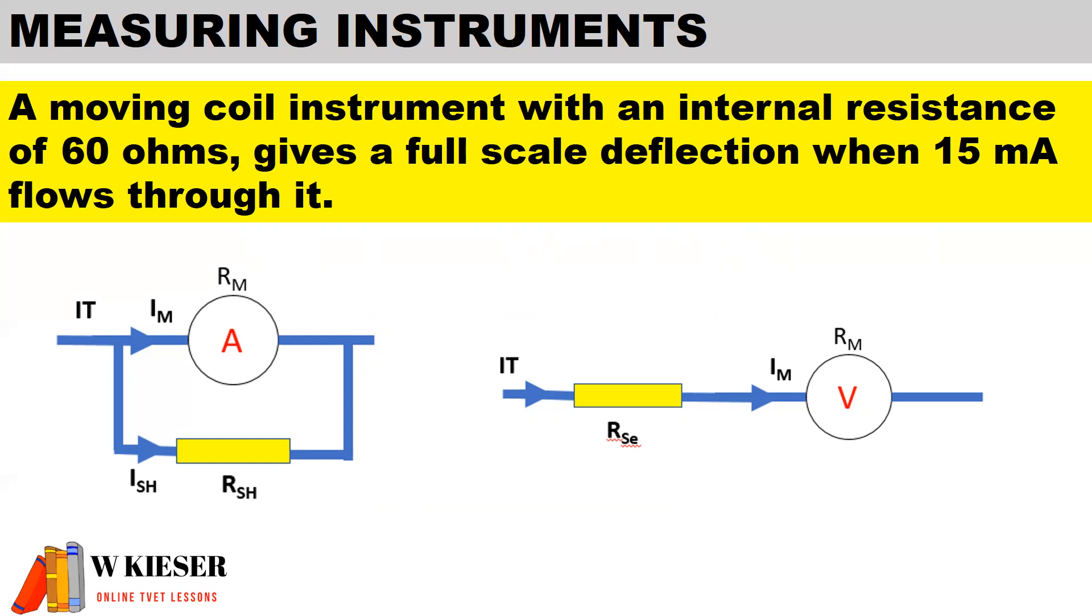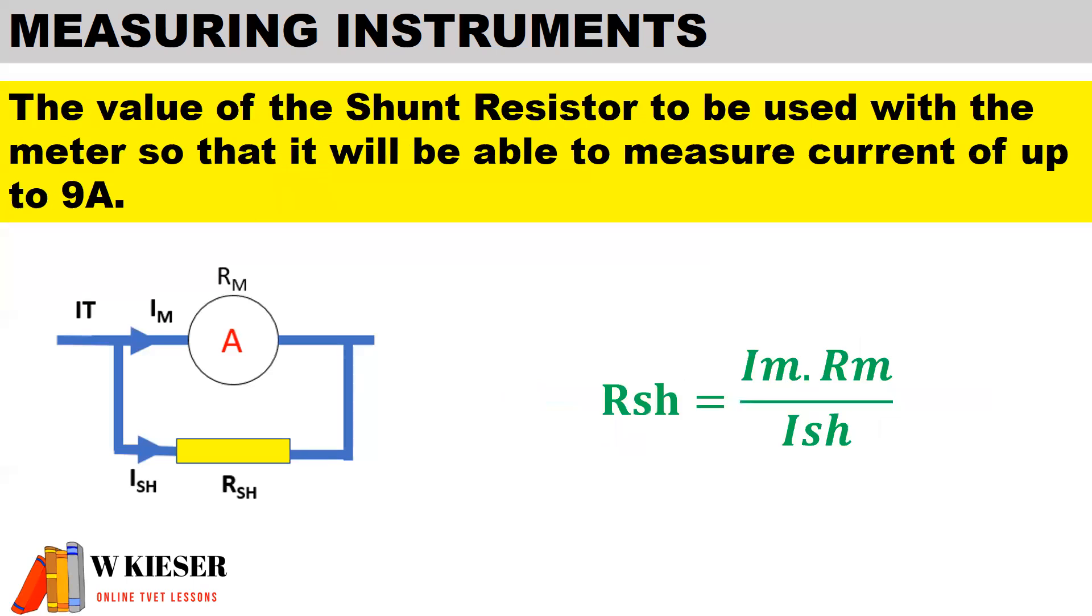In order for our moving coil instrument to measure current, we will place a resistor in parallel to the meter. For our moving coil instrument to measure voltage, we will put a resistor in series with the meter. Now, the value of the shunt resistor to be used with the meter so that it will be able to measure current of up to 9 amps.